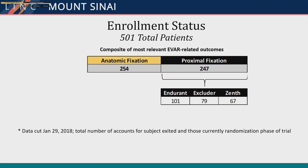As of January 2018, we have 501 patients. 254 are in the AFX arm and the rest are in the proximal active fixation arm, with Endurant leading the way for most.